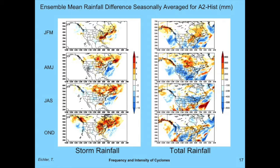Looking at rainfall differences — A2 minus historical — on the left is storm rainfall and on the right is total rainfall, with colors indicating millimeter departures. In winter, you get increased rainfall across the southern U.S. and up the East Coast in A2. In spring, decreased rainfall off the East Coast, but still a good increase across the Great Lakes. In summer, not much signal from storms, with a slight decrease just to our west across Kansas and Colorado. Most interesting is the total rainfall: in winter, an increase across the Midwest, but drying across Texas and the Southwest. As you proceed to spring, that dryness spreads across the Rockies and the Gulf of Mexico, with some of that dryness right over the Midwest.